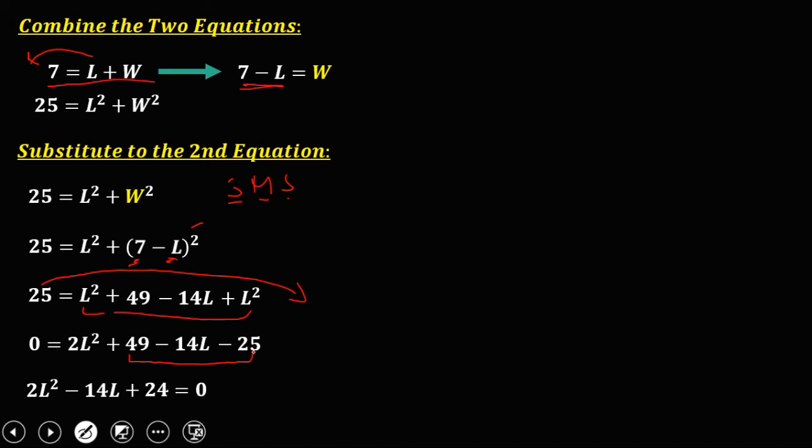Since we can reduce this equation divisible by 2. So divide by 2, that's L squared. Divide by 2, that's negative 7. And divide by 2, that's 12. So we have now this quadratic equation. So we can solve this one by factoring.